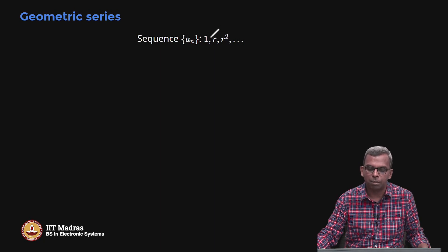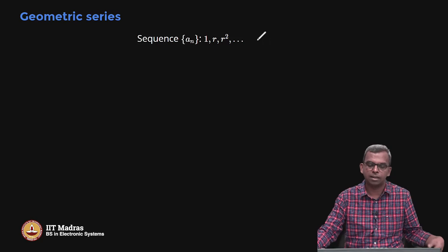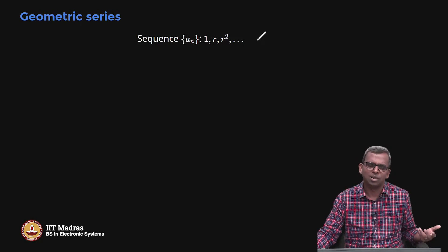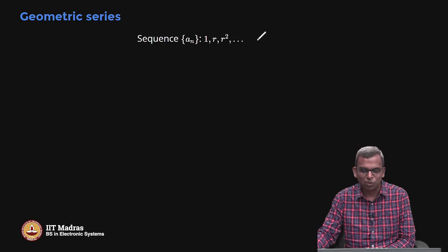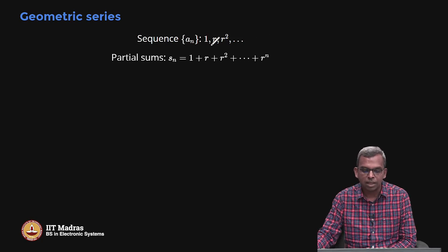Every element — the next element is r times the previous element. So you have 1 here, r times 1 is r, r times r is r², and so on. It is called geometric as opposed to arithmetic. Arithmetic is where you do addition; in geometric you do multiplication. So this is called the geometric sequence.